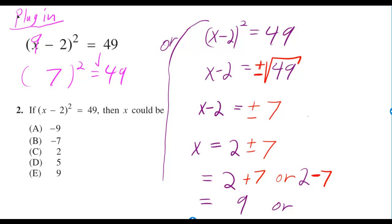Got a real crazy problem here. If x minus 2 squared is equal to 49, then x could be negative 9, negative 7, 2, 5, or 9.